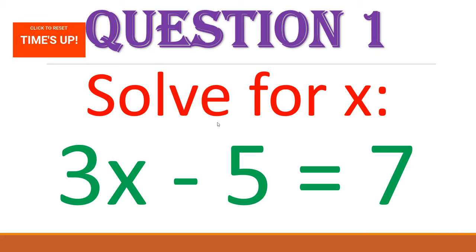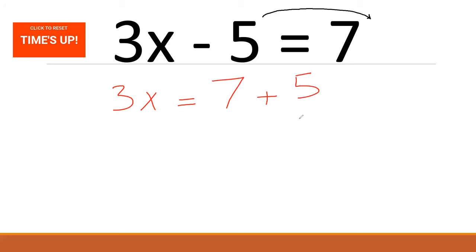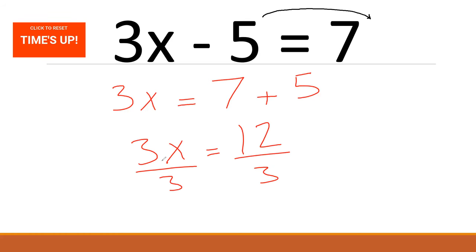Solve for X: 3X minus 5 equals 7. Let's calculate step by step. Step 1: take the 5 from this side and put it on the other side — it changes to positive. So 3X equals 7 plus 5. That gives us 3X equals 12. Now divide by 3 on each side; the 3s cancel each other. Our answer is X equals 4.